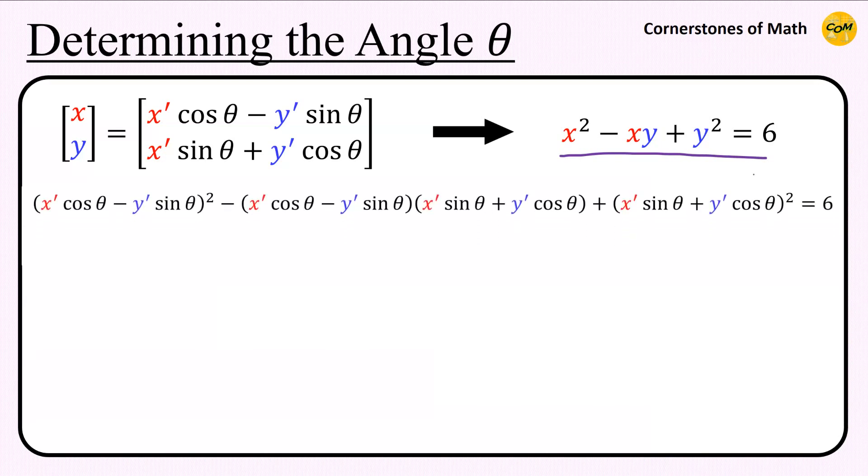And let us simplify this by grouping in terms of our new variables, x prime and y prime. Then we have this. We have x prime square terms, then x prime y prime terms, and y prime square terms.